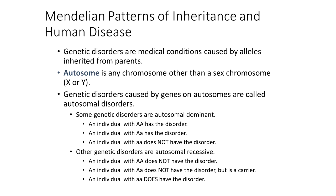We've learned a little bit about Mendel. We know that he used pea plants to determine traits and alleles and find out what was dominant and recessive, and how that plays out. But now we're going to take that a step further and look at how the things Mendel taught us can be used to determine inheritance and human disease.